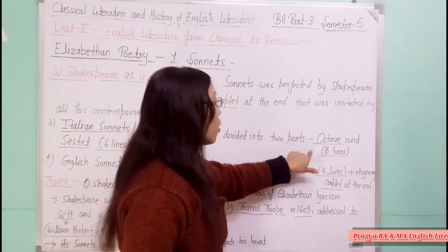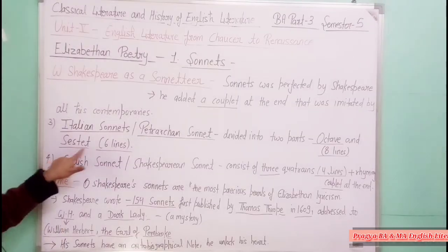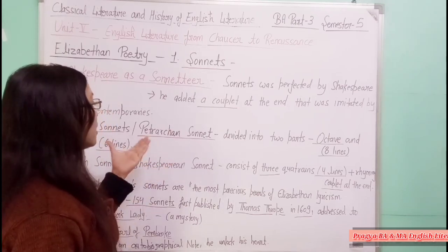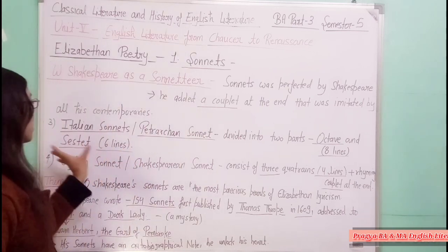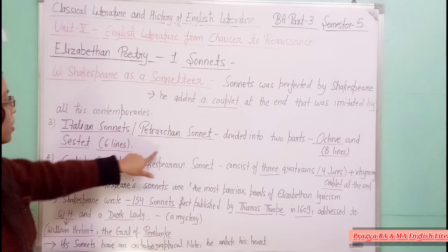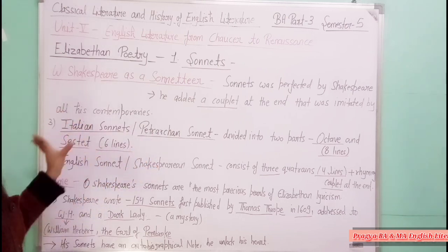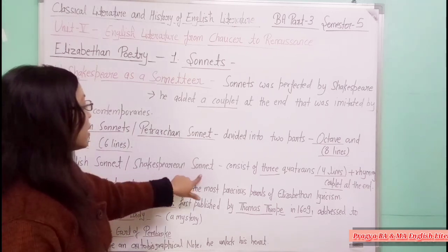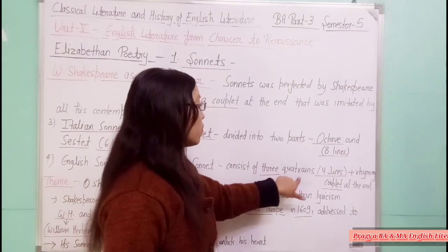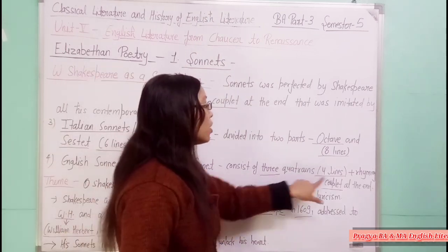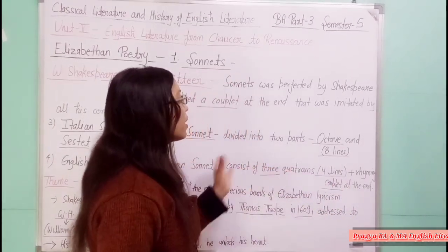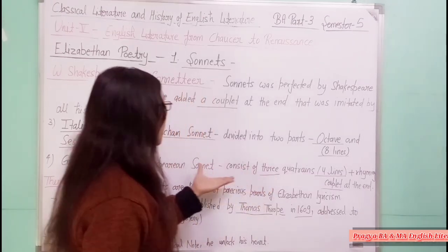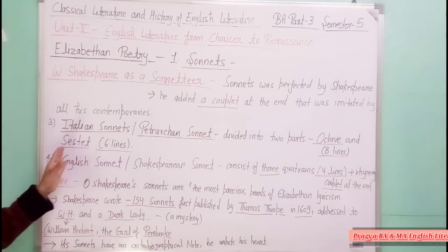In the Italian sonnet form, the first eight lines are called the octave and the last six lines are called the sestet. But William Shakespeare developed what is called the English sonnet or Shakespearean sonnet, which consists of three quatrains of four lines each, plus a rhyming couplet at the end. So it is four lines times three, equaling twelve lines, plus the final rhyming couplet — totaling fourteen lines. This is the rhyme scheme of Shakespeare.